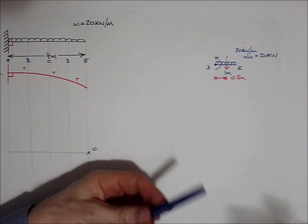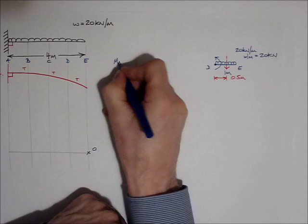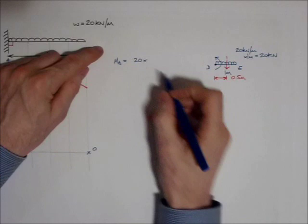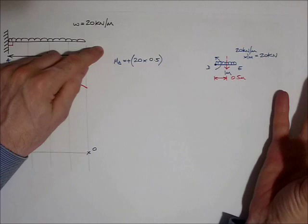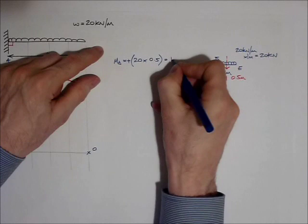That's good to know. So when I take moments about point D, MD equals the force, 20, times its distance from point D, 0.5. The whole thing would go clockwise around point D, so I'm going to call it positive, because arbitrarily saying that clockwise moments are going to be positive, and that amounts to 10 kilonewton metres. That's good.